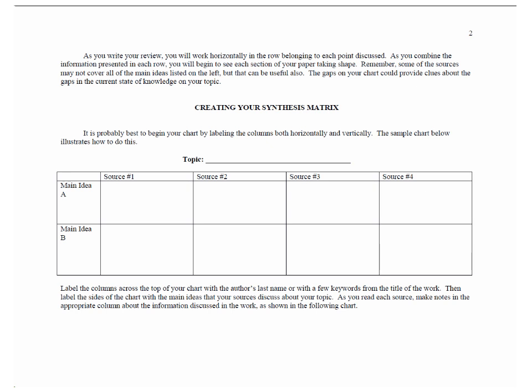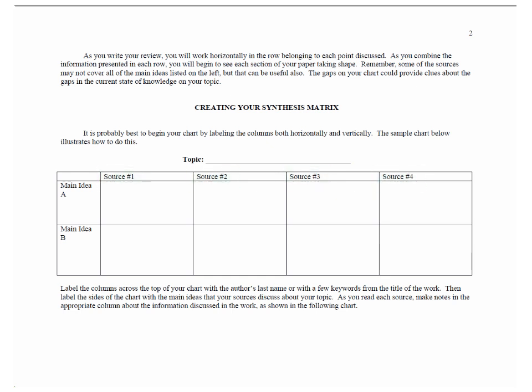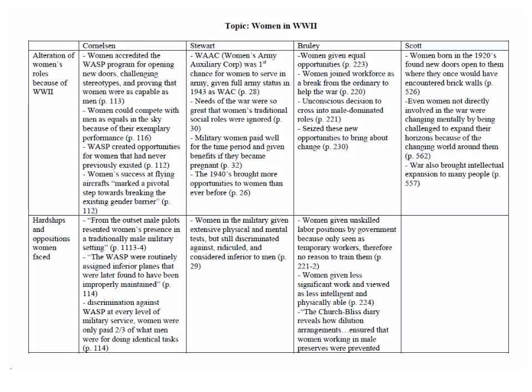The synthesis matrix puts sources on the horizontal axis and main ideas on the vertical axis. Be sure you clearly identify each source on the horizontal axis so you don't accidentally lose track of something later on. If we look at the example matrix here, you'll see what it can look like.